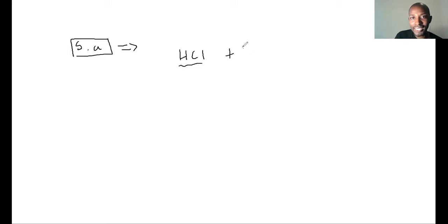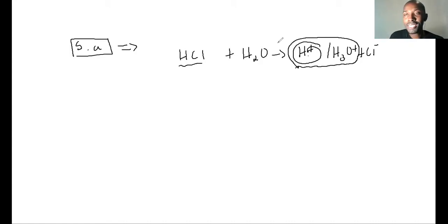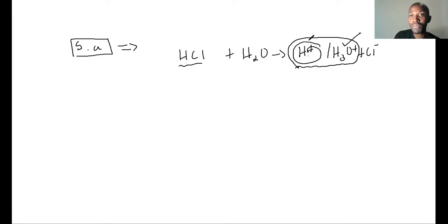Why is HCl a strong acid? Because when it is in solution — when it is in water — it completely ionizes to form hydronium ions, H⁺ or H₃O⁺ ions, as well as the chloride ion. Remember, H⁺ and H₃O⁺ can be used interchangeably. Strong acids, therefore, are acids that when in solution completely ionize or completely dissociate to give a high concentration of hydronium ions or hydrogen ions. I'll put that nicely in your notes so that you can understand clearly.